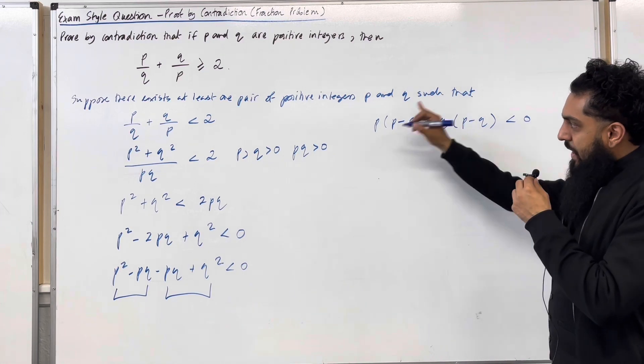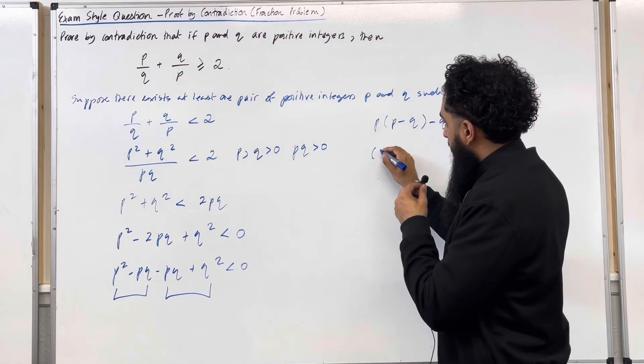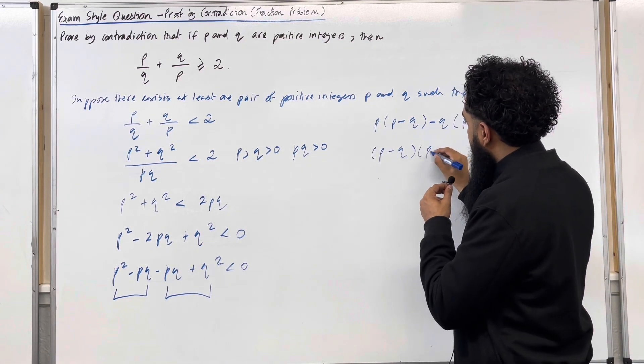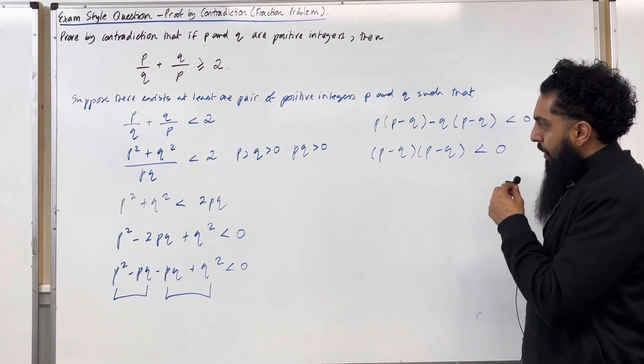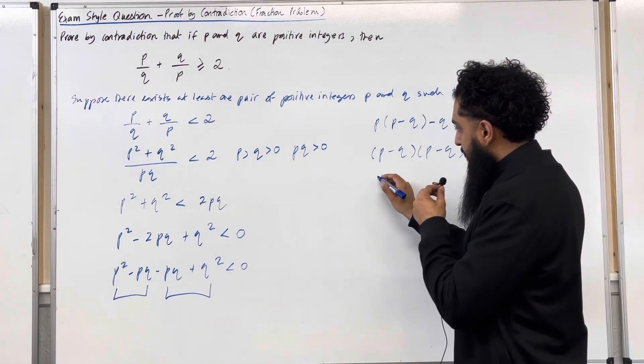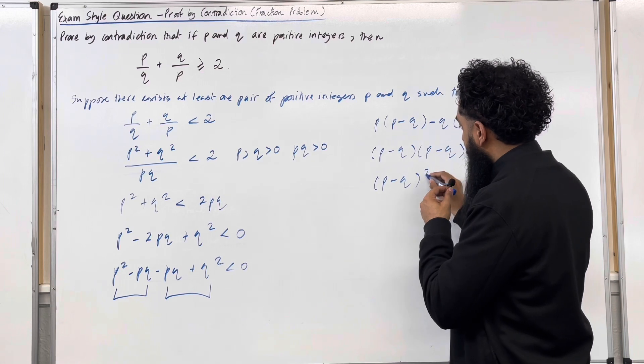So if I factorize this one over here, I get p minus q, p minus q, less than 0. And this can be written as p minus q in bracket squared, less than 0.